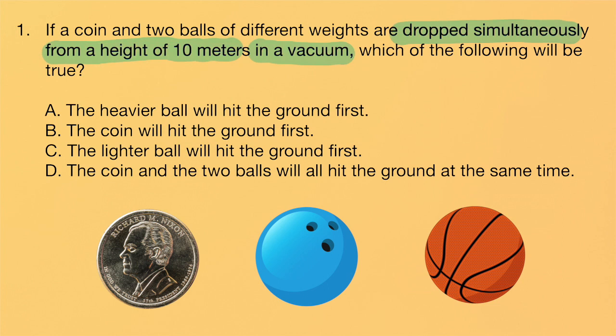But if we take away that air resistance, when an object is dropped, the only force acting on it is gravity. And gravity acts the same on all forces. And therefore the correct answer to this question is answer D. The coin and the two balls are all going to hit the ground at the same time.